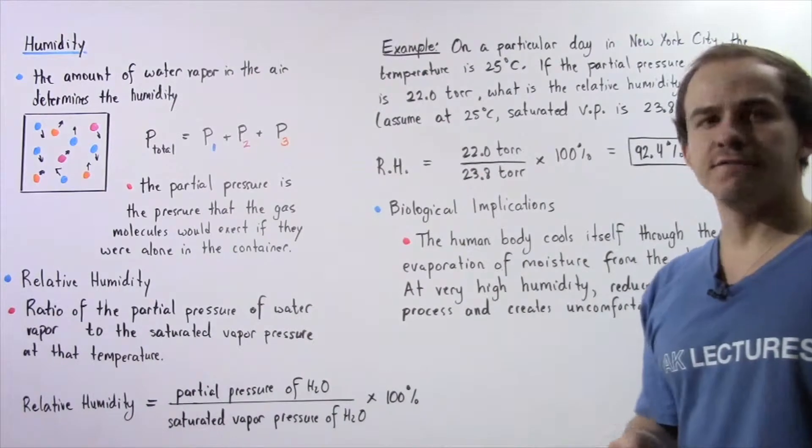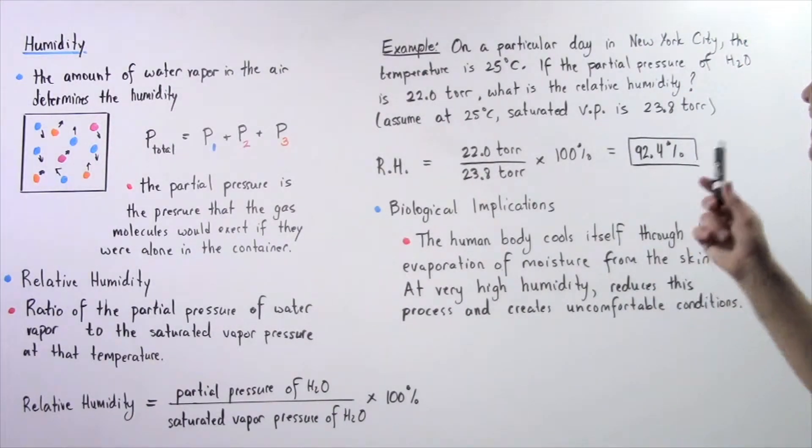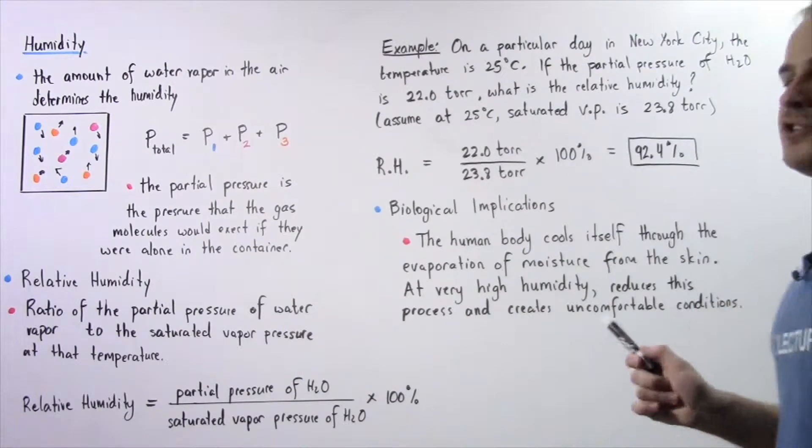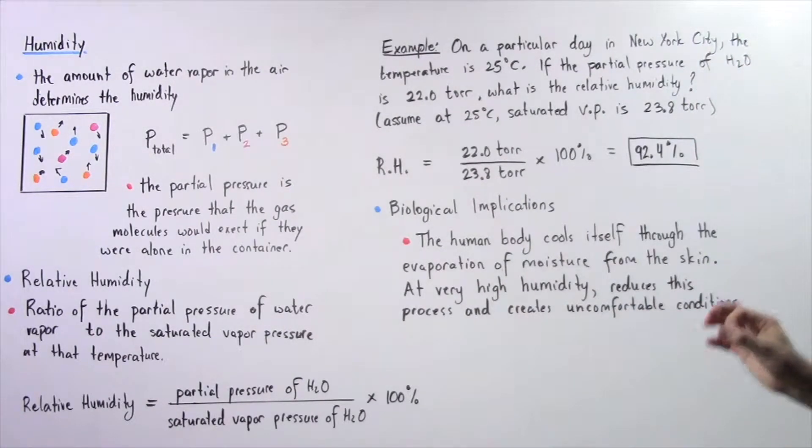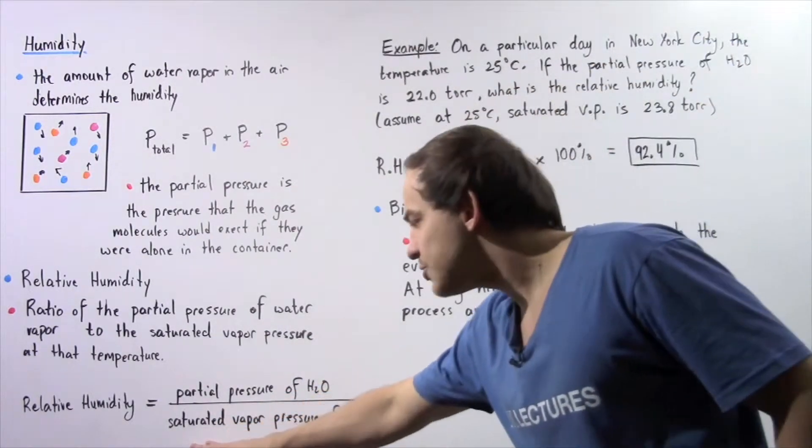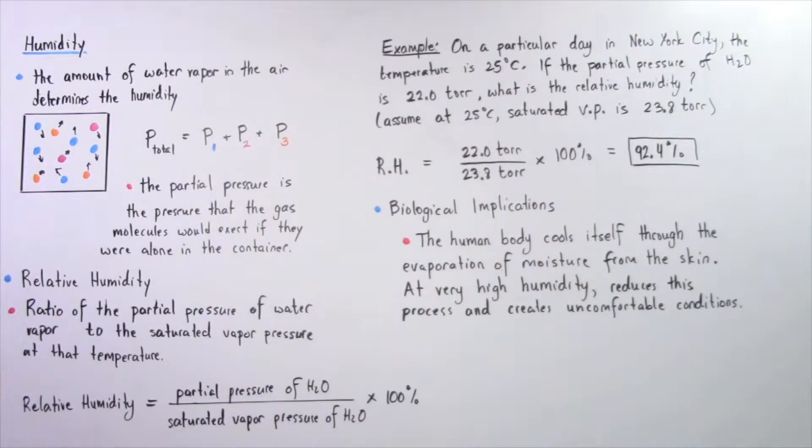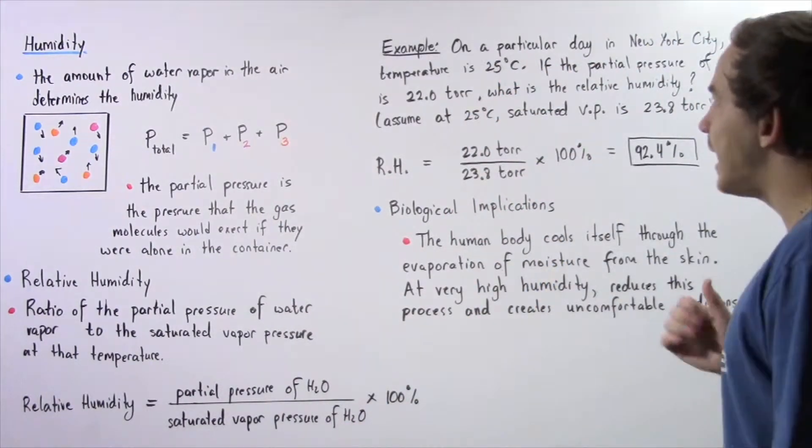Let's look at the following example. On a particular day in New York City, the temperature is 25 degrees Celsius. If the partial pressure of H2O is 22 Torr, what is the relative humidity?